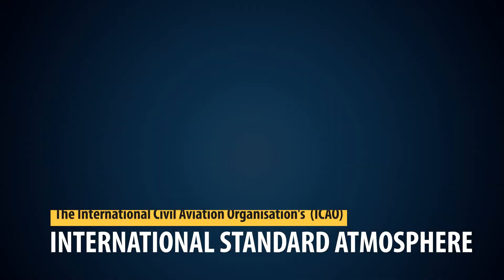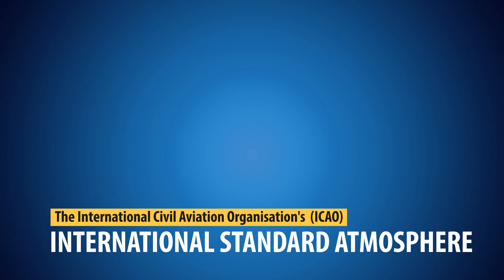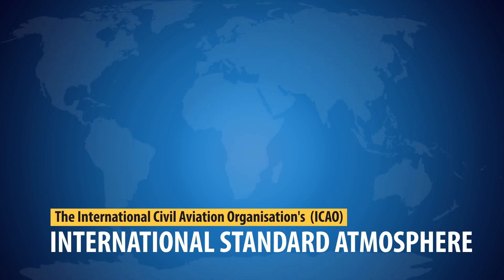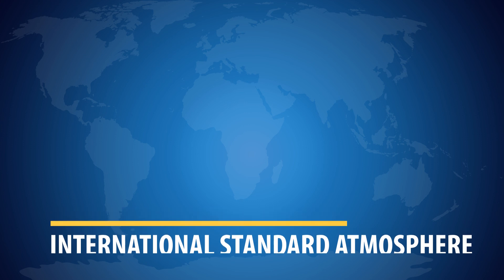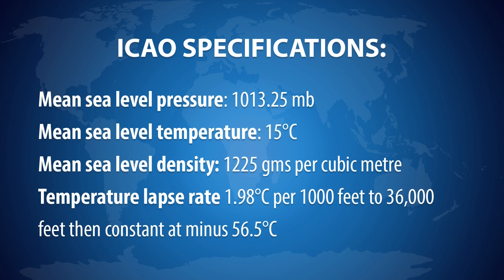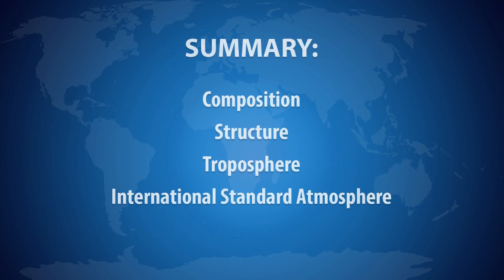Finally, let's talk about the International Standard Atmosphere. The International Civil Aviation Organization's International Standard Atmosphere, or ISA, provides a fixed standard atmospheric model used for many purposes, among which are the uniform assessment of aircraft performance and the calibration of some aircraft instruments. The model is akin to the average condition in mid-latitudes. We hope you enjoyed traveling through and learning about the atmosphere.